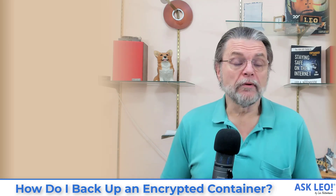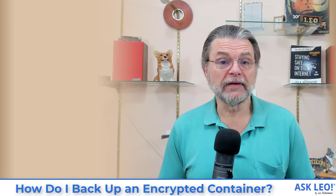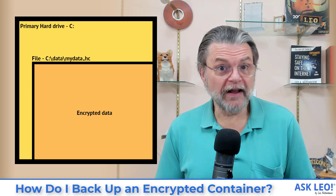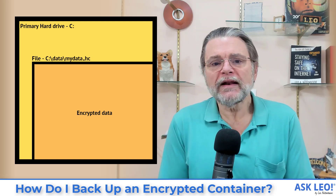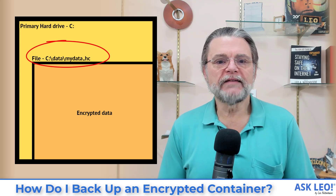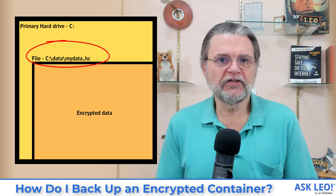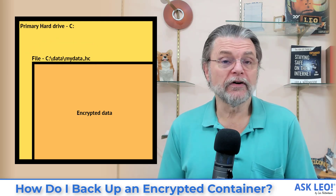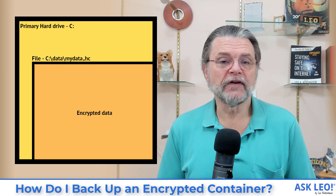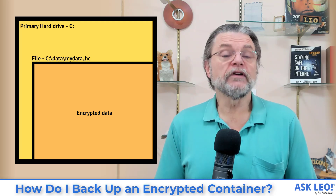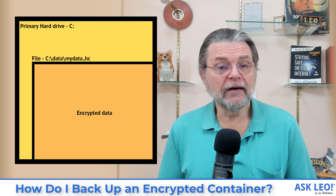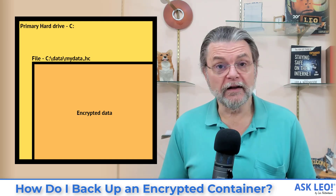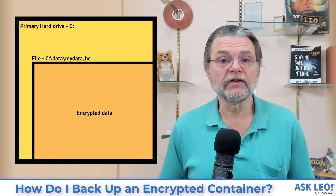Here's an example of what that looks like, conceptually at least. What we have is our primary hard drive C, which contains all of our files. On it, I have this example file C:\data\mydata.hc. HC happens to be the extension that VeraCrypt uses for its container files. What you see there is just encrypted data — we haven't done anything with it, we haven't mounted it, we haven't tried to access its contents, and right now we can't because it's all encrypted.